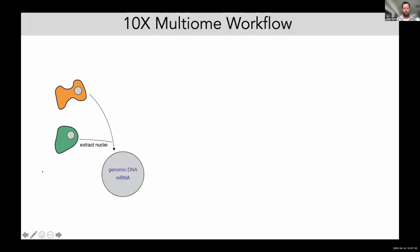I'll begin by talking about the 10x multi-omics workflow. Sandra talked a little bit about it, so I'll pick up where she left off. Essentially the premise of this workflow is as follows: one would extract nuclei, and then the goal is to sequence both the accessible chromatin within genomic DNA, as well as the trace amounts of mRNA that's present within the nucleus.